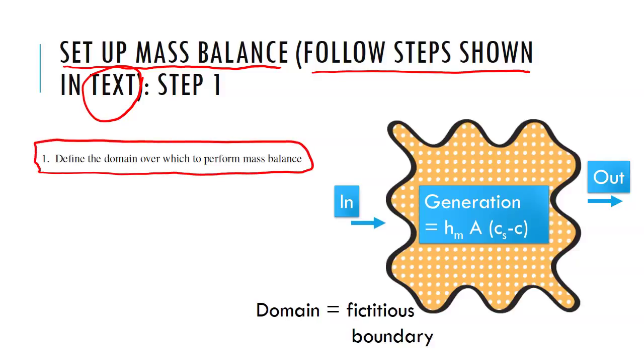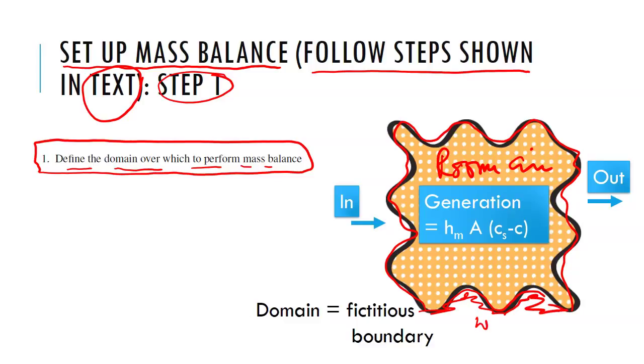This is our step one where you define the domain over which to perform mass balance. So we are trying to define the boundaries over which we are doing mass balance. So this boundary is for room air. On the bottom part is water from which chloroform comes into the room. So this is my boundary. The inside part of this is the domain and it's some fictitious boundary.